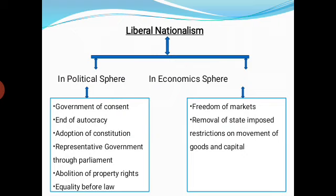Liberalism distinguished between two spheres. First, in the political sphere: liberalism stood for government of consent — meaning government with permission of the people — end of autocracy, adoption of a constitution, representation through parliament, and abolition of property rights discrimination, ensuring equality before law.